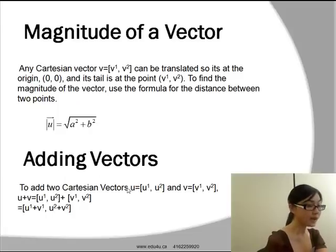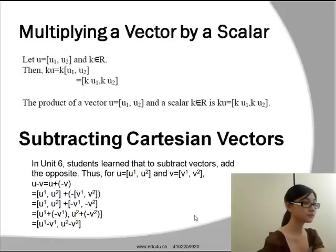Now let's take a look at adding vectors. To add two Cartesian vectors u=[u¹,u²] and v=[v¹,v²], we have u+v = [u¹,u²] + [v¹,v²] = [u¹+v¹, u²+v²].